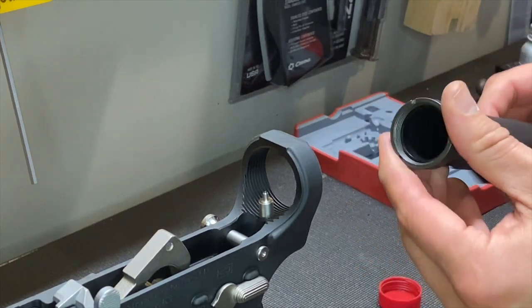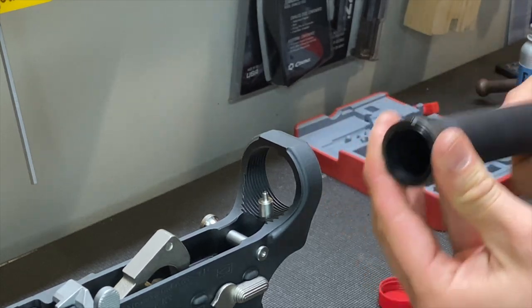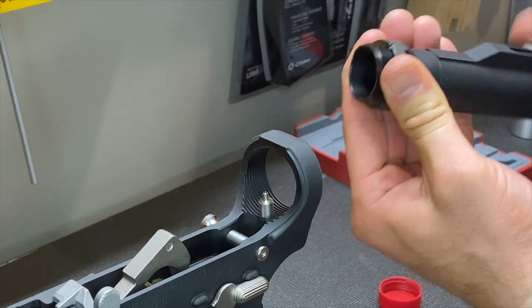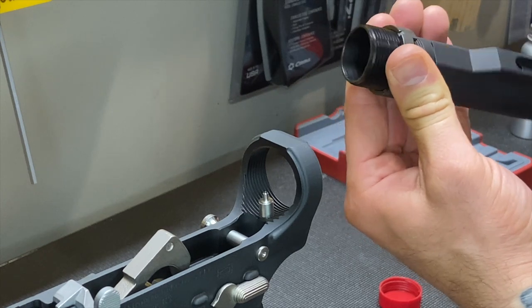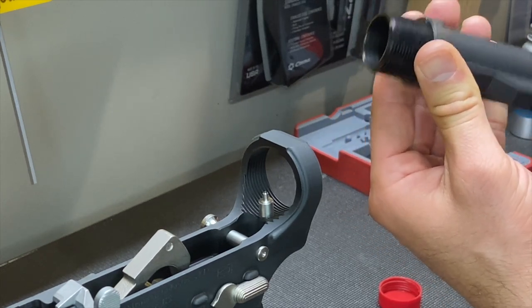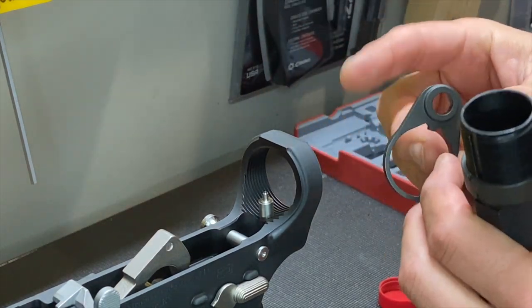Now before we put the buffer tube on, we want to make sure that we load our castle nut, that's what this thing's called. Get our castle nut on the buffer tube all the way.